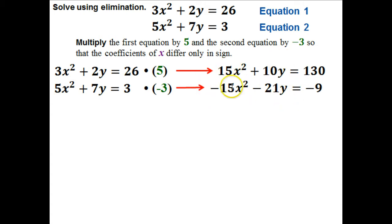Now that I've got these two, I've got my x's can cancel. So I'm going to add those two together. If I add them together, that will cancel out. This will give me a negative 11y here. And let's see, this will give me a 121.